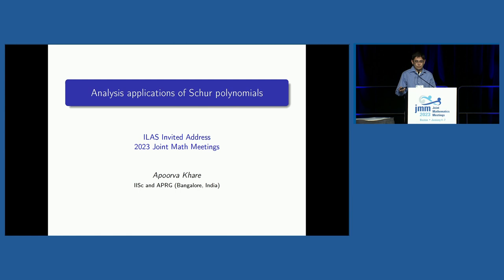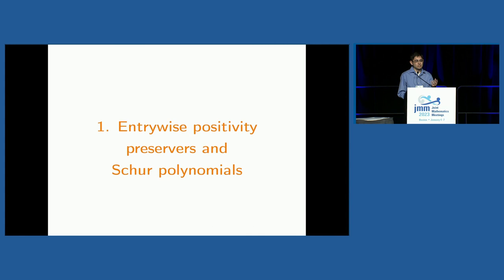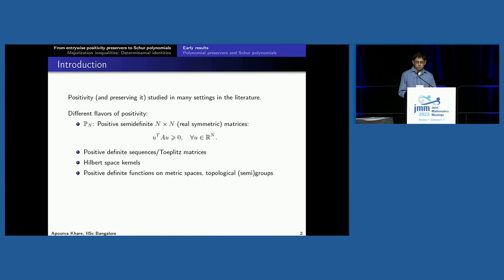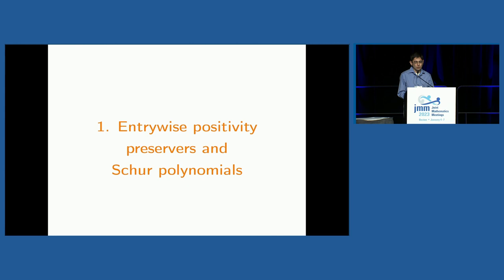Today's talk is about how they have been showing up in analysis. The talk is in three parts. The first part is sort of half the talk — it's about entrywise functions that preserve positivity and how these lead naturally to Schur polynomials. This is the journey that I myself took, and this is how I found out about Schur polynomials occurring naturally in this part of analysis. From there we get to how Schur polynomials show up in majorization inequalities, and then finally, Schur polynomials in analysis will help give back something to algebra in terms of symmetric function identities.